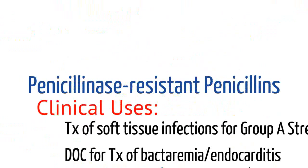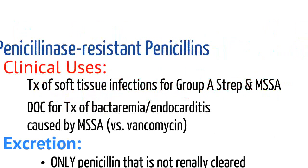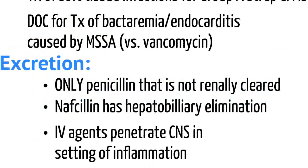Penicillinase-resistant penicillins are generally used for soft tissue infections due to group A strep and MSSA. They are the drug of choice for bacteremia and endocarditis caused by MSSA, found superior to vancomycin — though this applies to MSSA, not MRSA. This class is the only class of penicillins not renally cleared; for example, nafcillin is cleared through the liver, so it's important to know if a patient has cirrhosis or acute hepatic failure. The IV agents in this class do penetrate the CNS when there is active inflammation, so they may be used in meningitis.